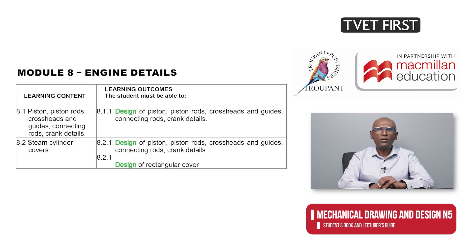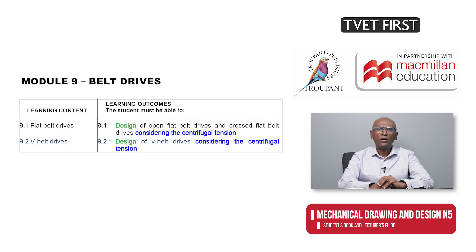The new Module 8 corresponds with the former Module 9 on engine details. The old syllabus called for both calculations and design, whereas the new one has rephrased this as demonstrating an understanding of their design. The new Module 9 corresponds with the former Module 5 on belt drives. The old syllabus specified various calculations and ratios for maximum power transmission, and the new curriculum summarizes this as requiring their design while considering centrifugal tension.